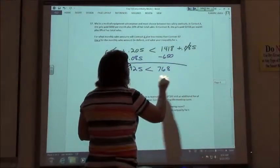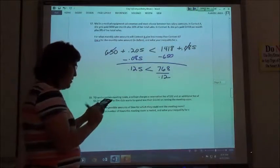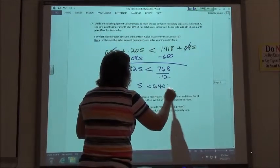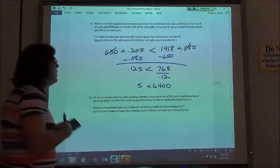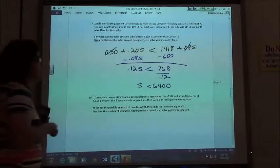If I divide that by 12%, then S is less than $6,400. So if her monthly sales is less than $6,400, then A is going to give me a lower salary than B.